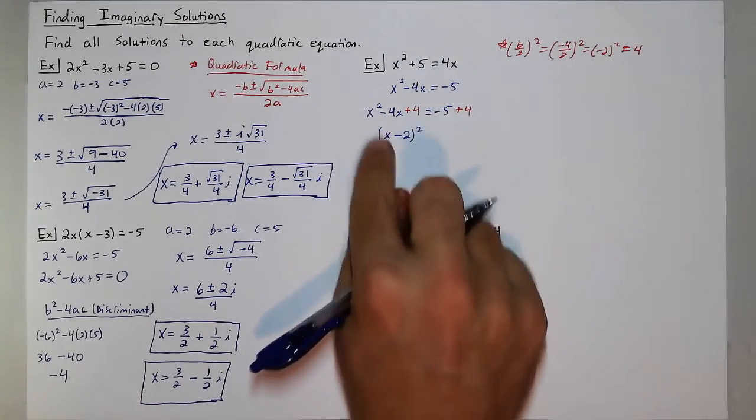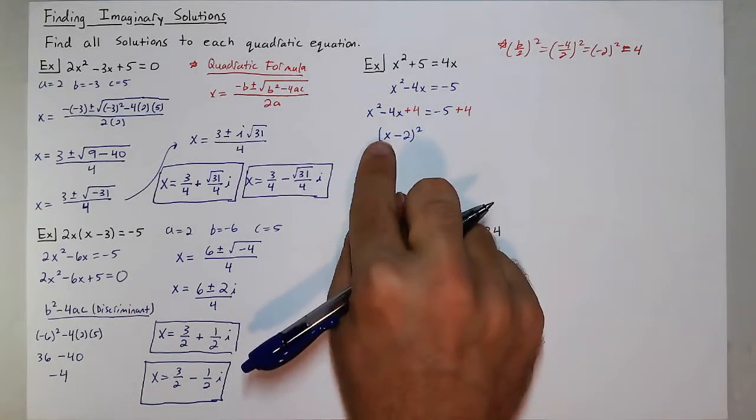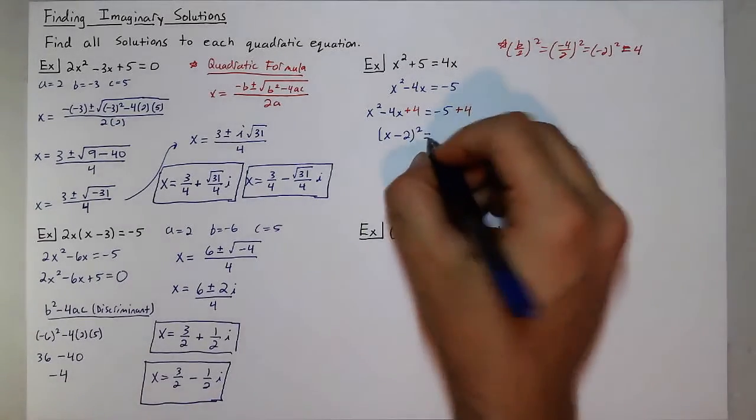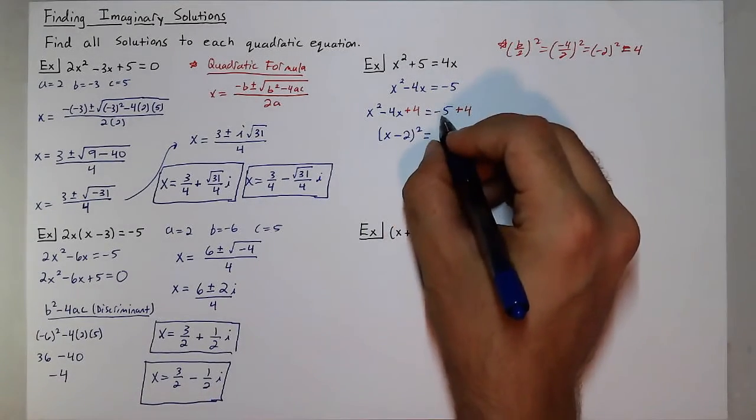Again, that's just like square root of x² which is x, square root of 4 which is 2, and you keep the sign from the middle. That's how you factor a perfect square trinomial. Then negative 5 plus 4 is negative 1.